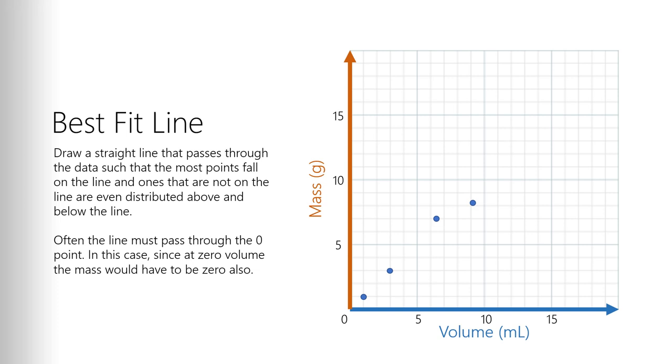Remember, we're subtracting the mass of the graduated cylinder out of this system. We just want to know the mass of the fluid in it. So that means that our line has to, by definition, go through zero, zero, right? This point down here in the corner, because that's theoretically what we would have at zero volume. We would also have zero mass.